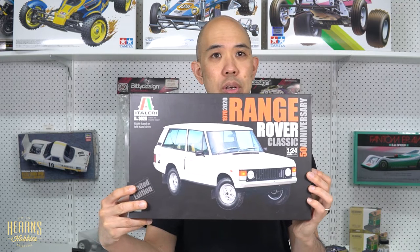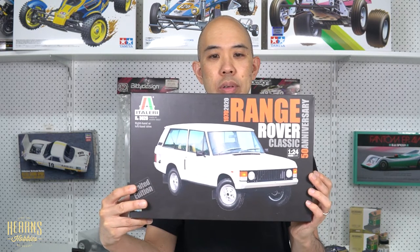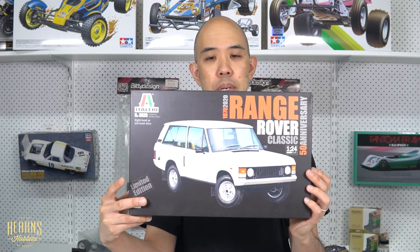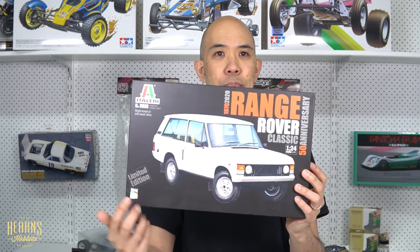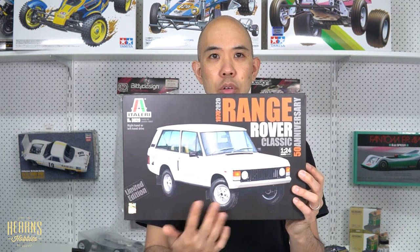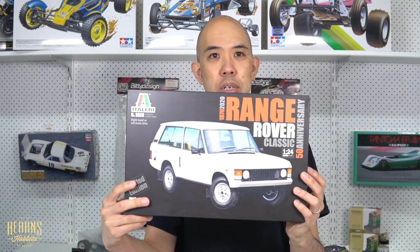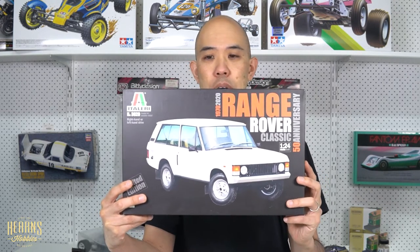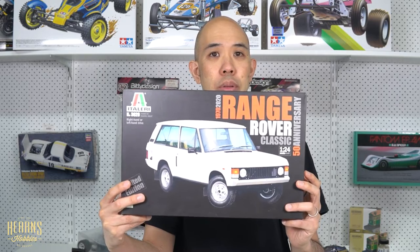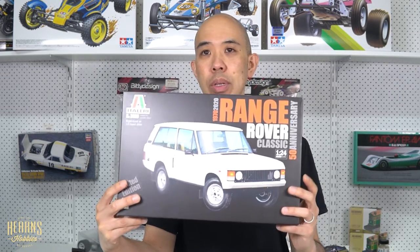An interesting story is when the Range Rovers were first released, the first group to take delivery was actually the British SAS, because they found this would be a great vehicle for carrying all their gear. It looked like a civilian vehicle but was a utility at the same time.